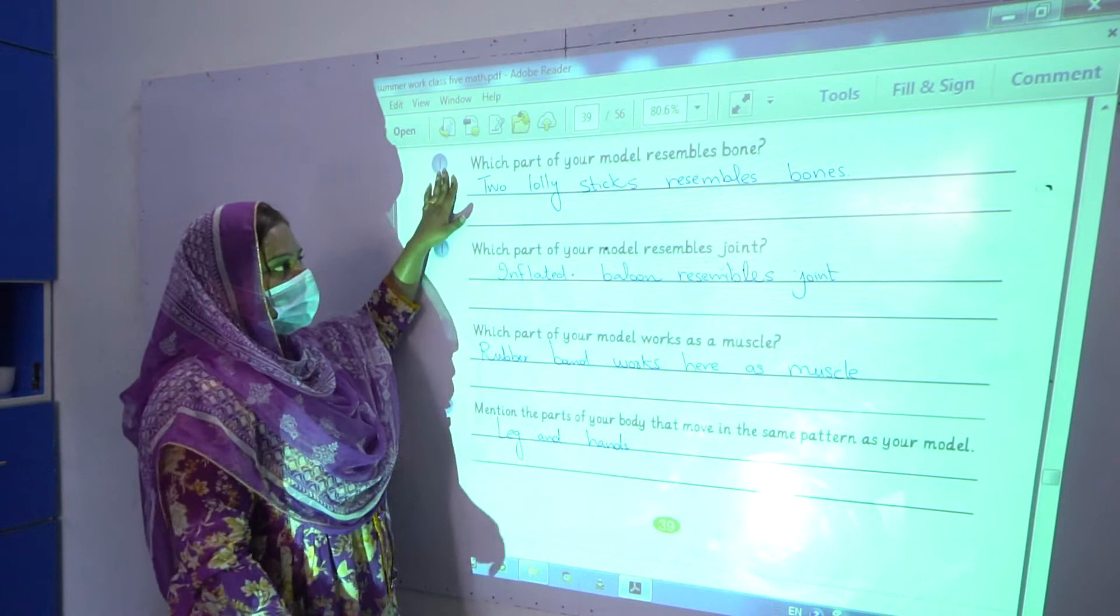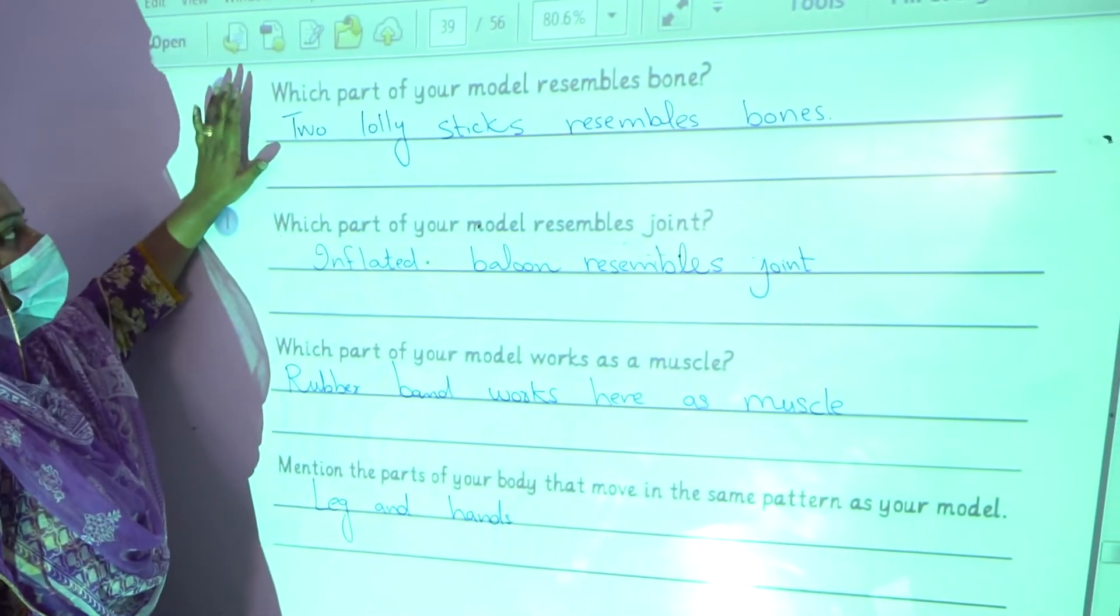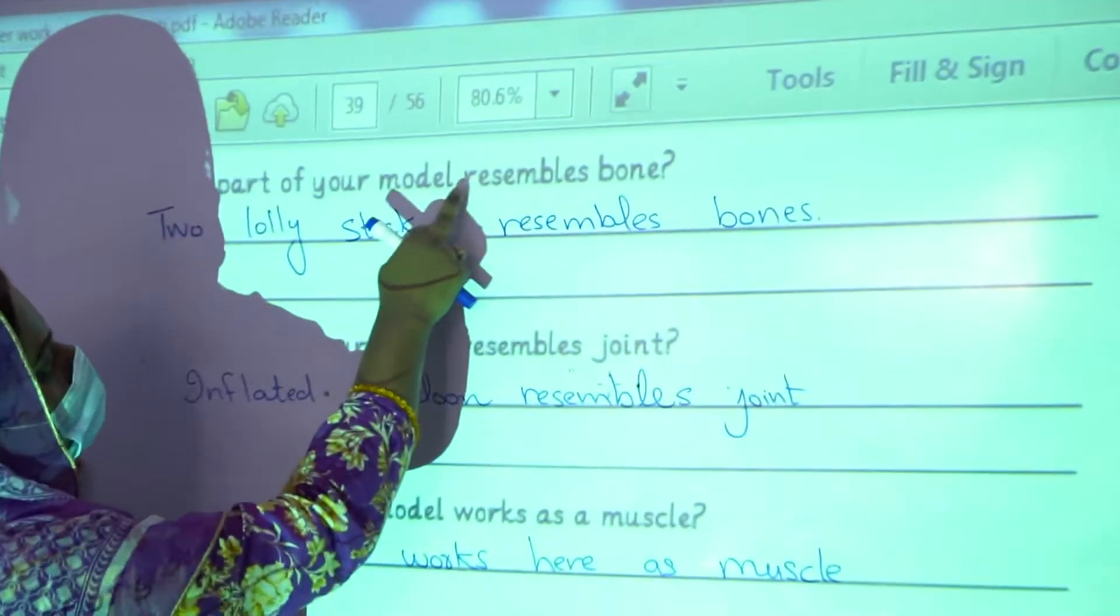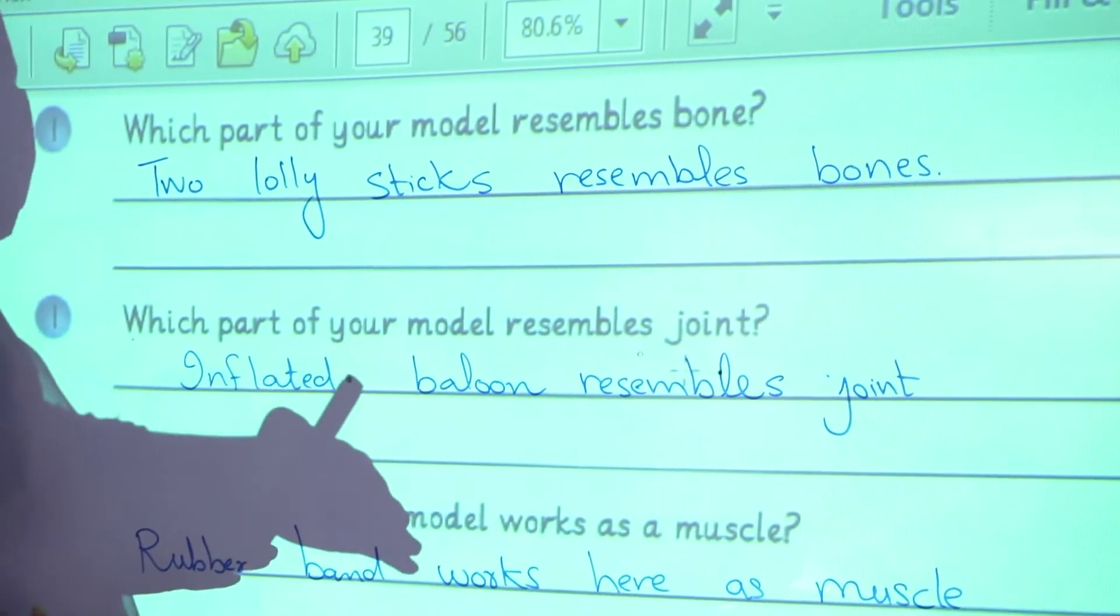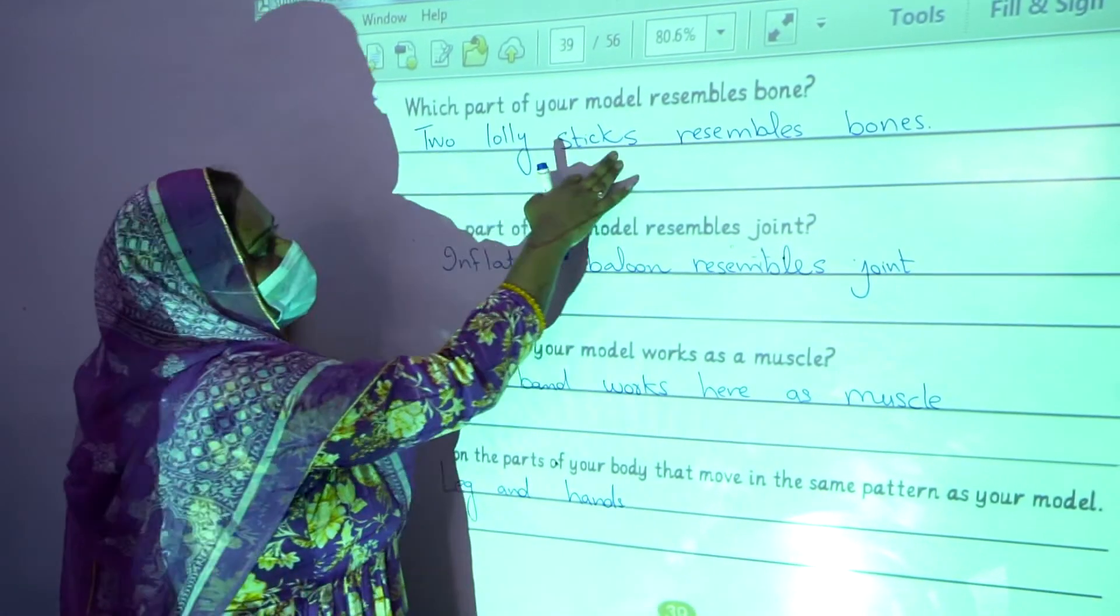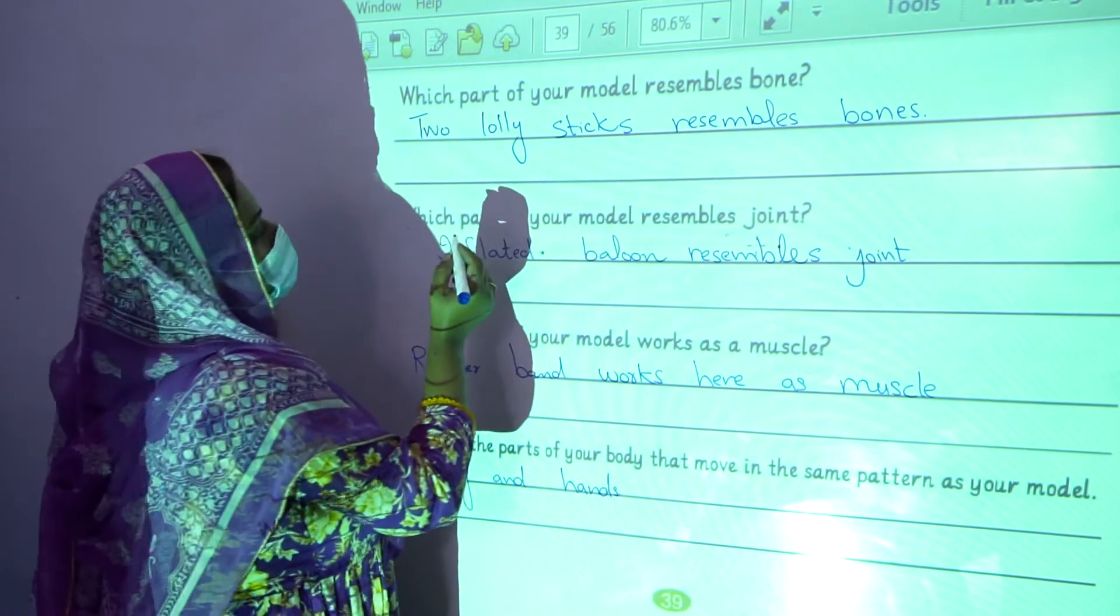These are some questions which are asked from the activity that I explained before. Question number 1 is which part of your model resembles bone? The model that you make with the help of lolly stick, which part resembles bone? Two lolly sticks resemble bone.